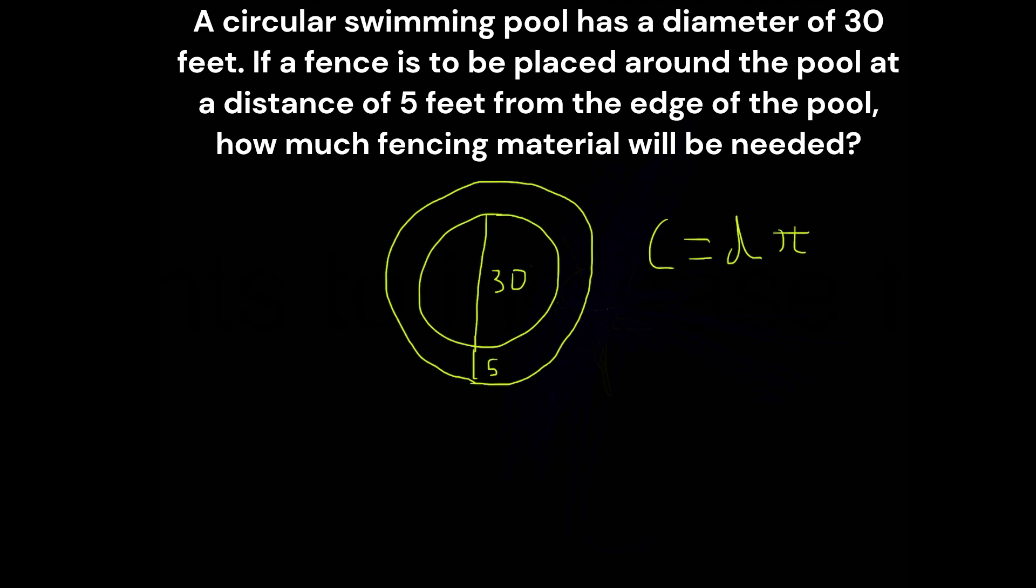Well, we have 30 over here, and we have 5 over here. That means this side is also going to be 5 as well, right? Because we need to find one edge to another edge. So we need to go through both edges.